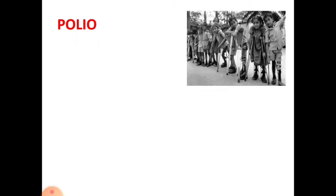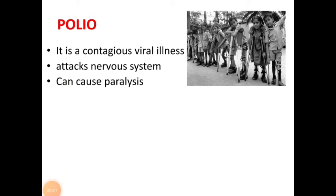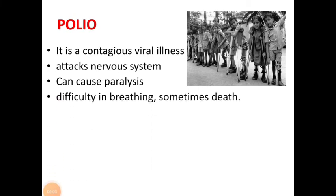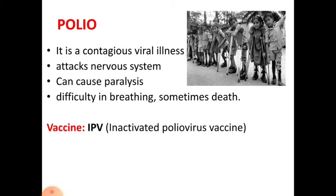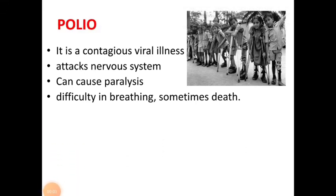The last disease we are going to cover is polio, also known as poliomyelitis. It is a contagious viral disease caused by a virus which attacks the nervous system and can cause paralysis, difficulty in breathing, and sometimes death. Children under five years of age are more likely to contract the virus than any other group.